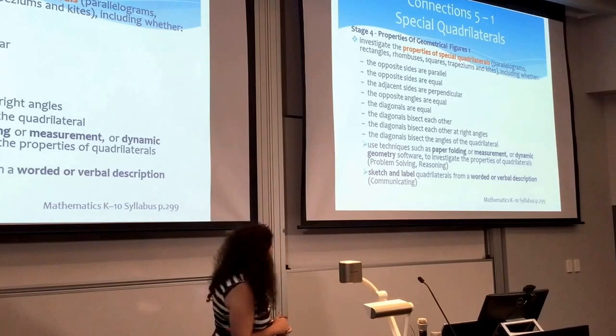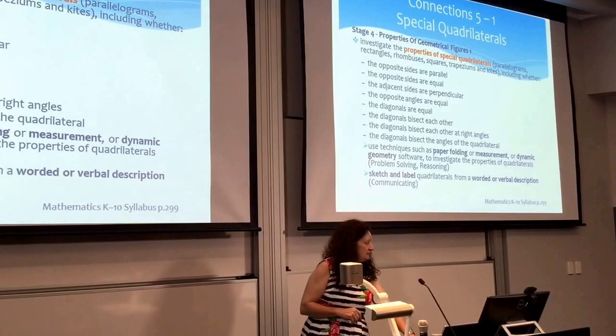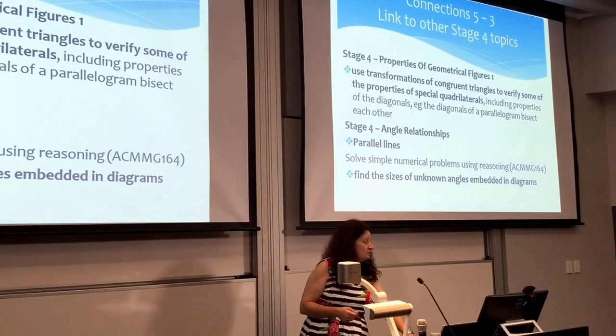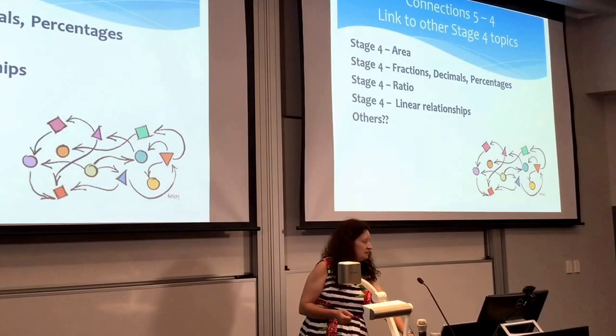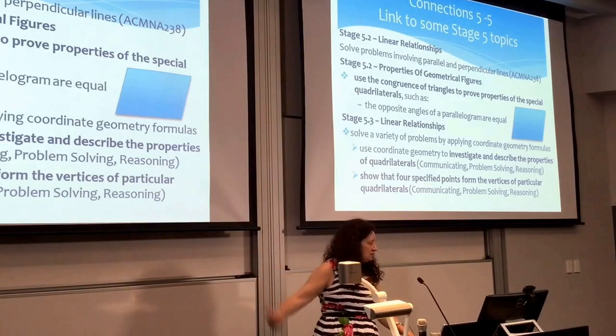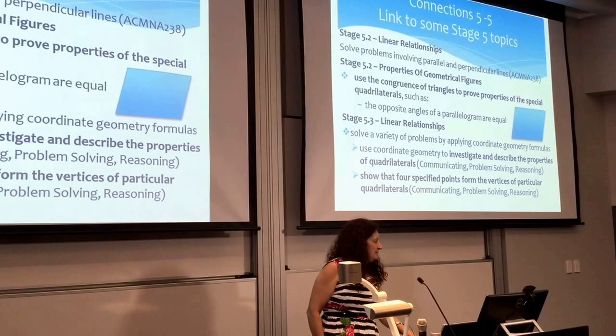Special quadrilaterals is something they do in Stage 4 in the topic of properties of geometrical figures. It can link back to Stage 3 in two-dimensional space and measurement. It can connect to other things in Stage 4 such as angle relationships, parallel line work, and other places where you can make connections to fractions, decimals, ratios, and linear relationships — all those things you can get connecting, as well as linking onto linear relationships and geometrical figures in Stage 5.